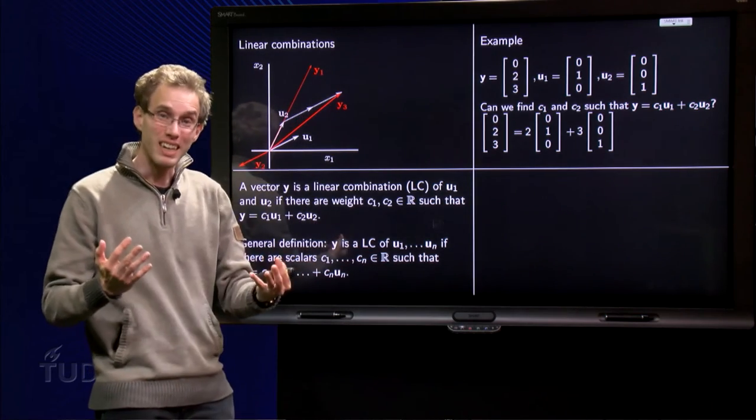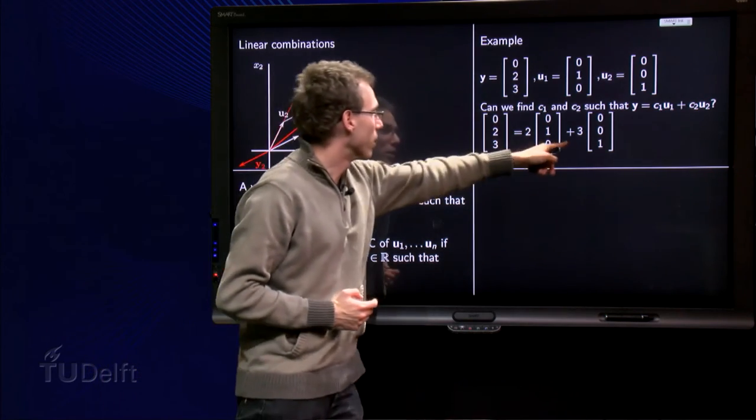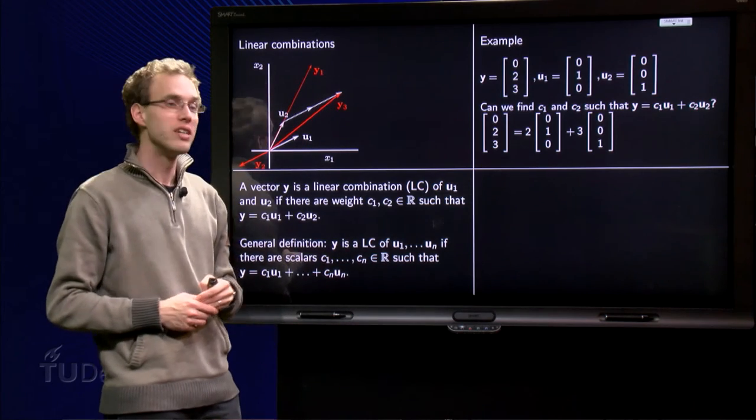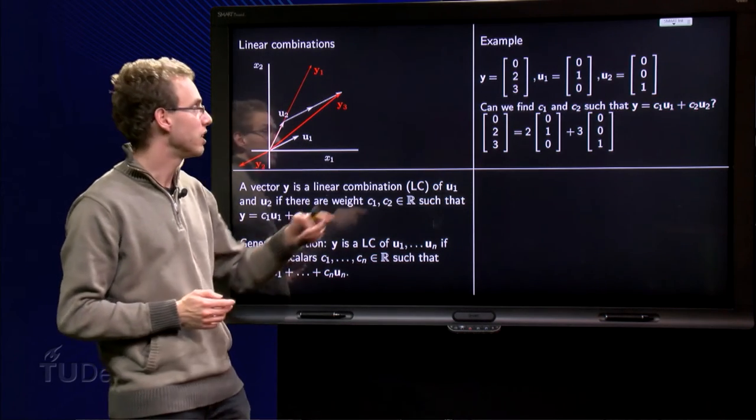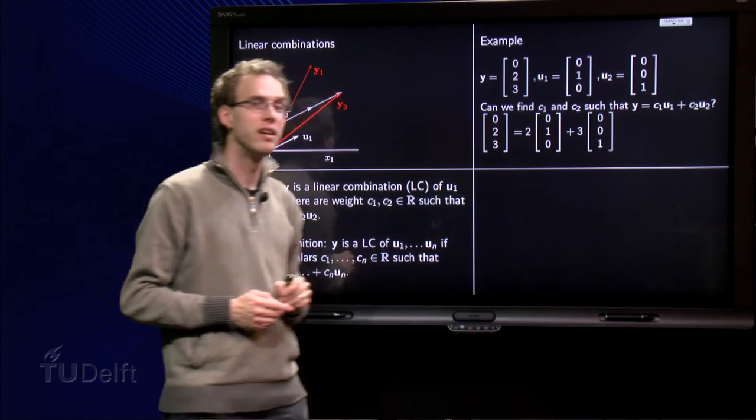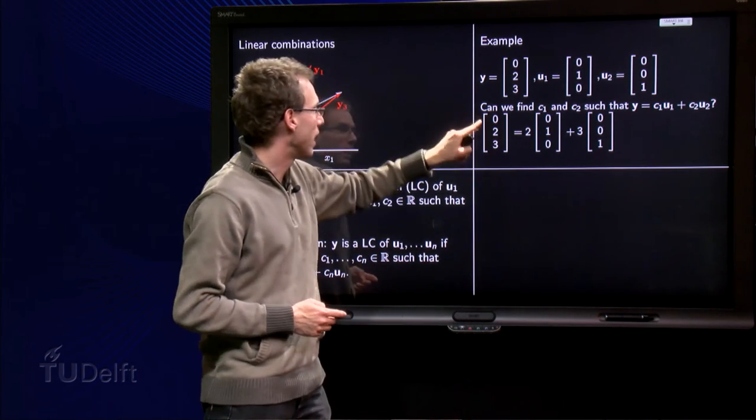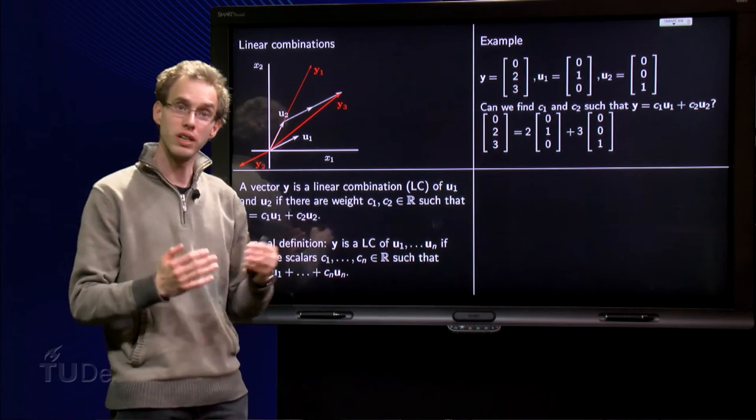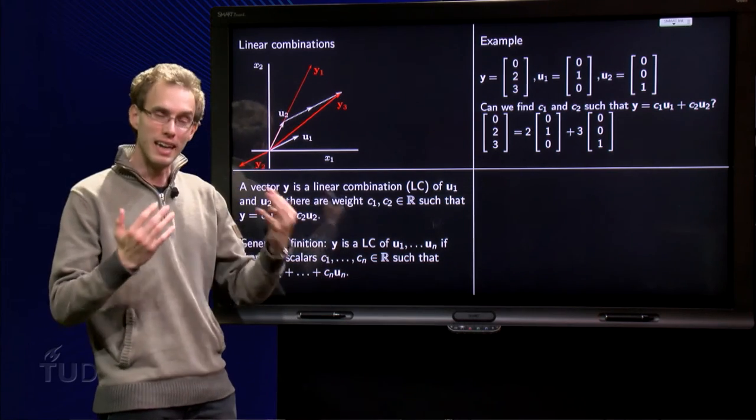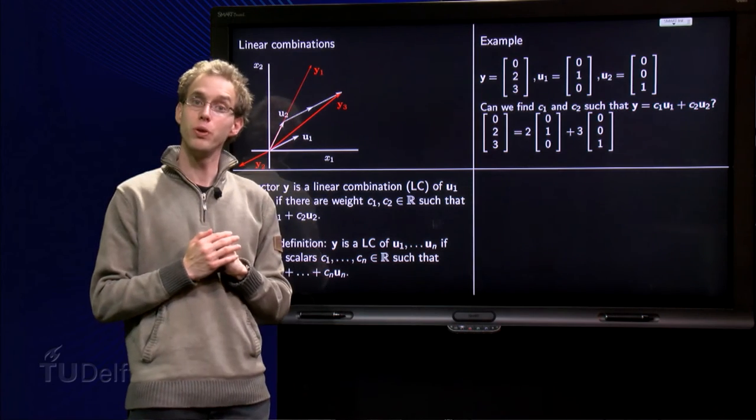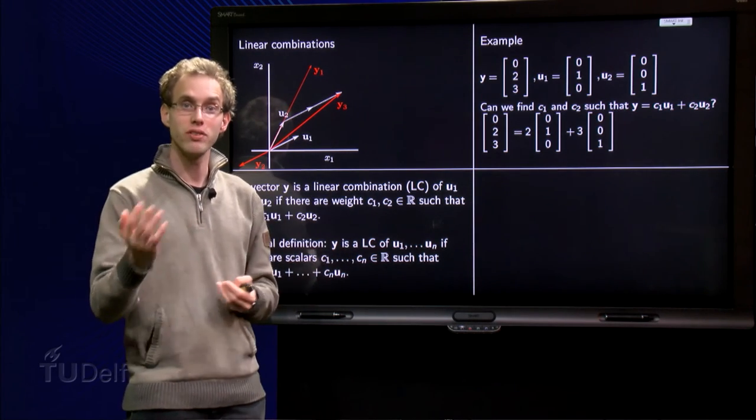Well this is a quite easy example, with u1 and u2 easy vectors, so I can see which ratio I have to take. I need to take 2 and 3. Because if I take 2 times u1 plus 3 times u2, I exactly get (0, 2, 3). So we conclude, yes, y is in this case a linear combination of u1 and u2 with weights 2 and 3.